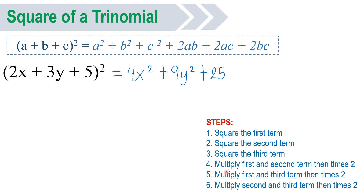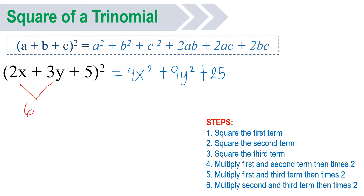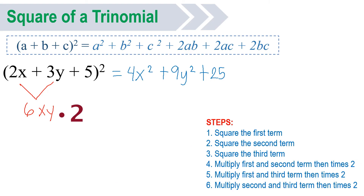Then fourth step: multiply the first and second term. First and second term, we have 2x and 3y. 2 times 3 will be 6, then x and y, then times 2. So 6xy times 2 — 6 times 2, that will be 12. Let's write 12, then copy the variable xy.